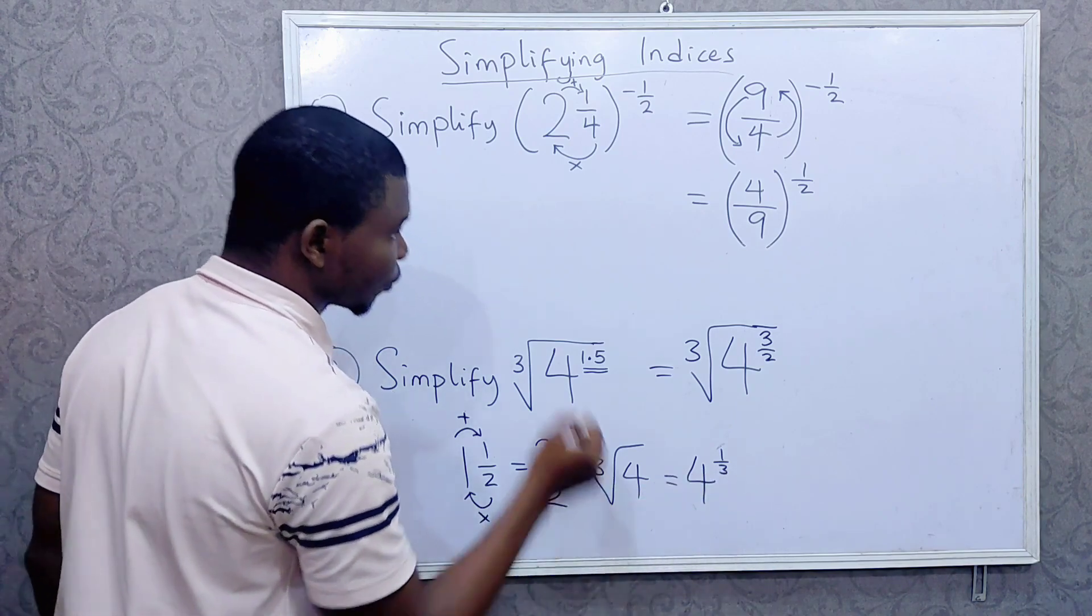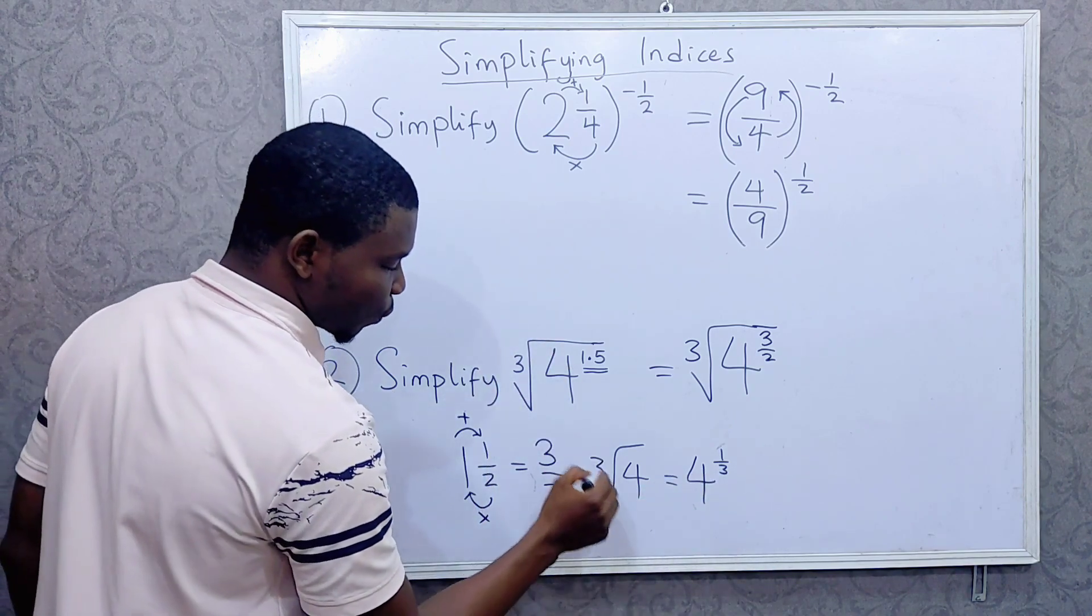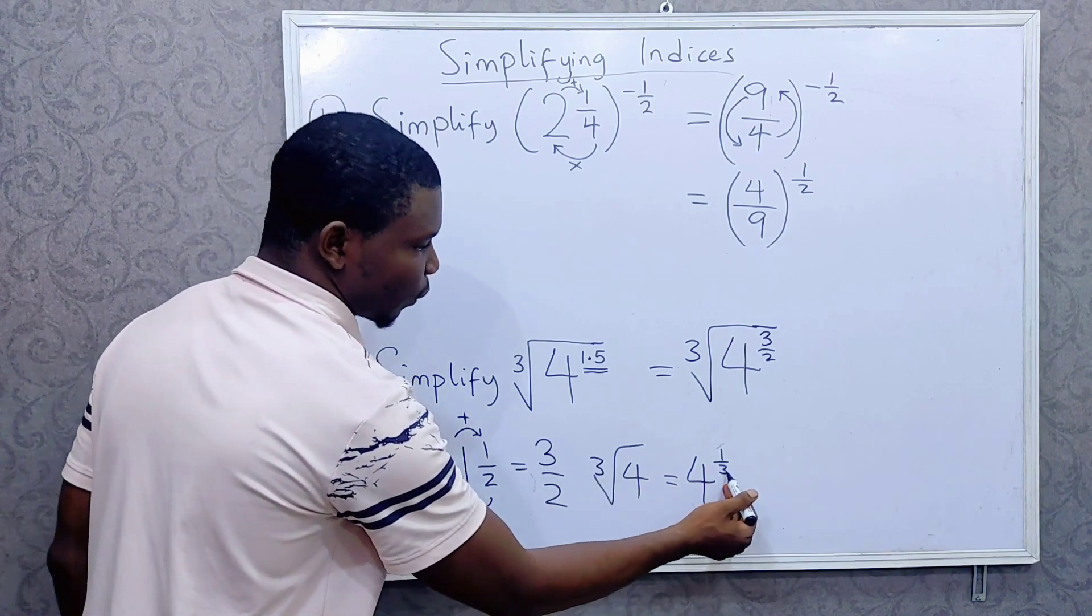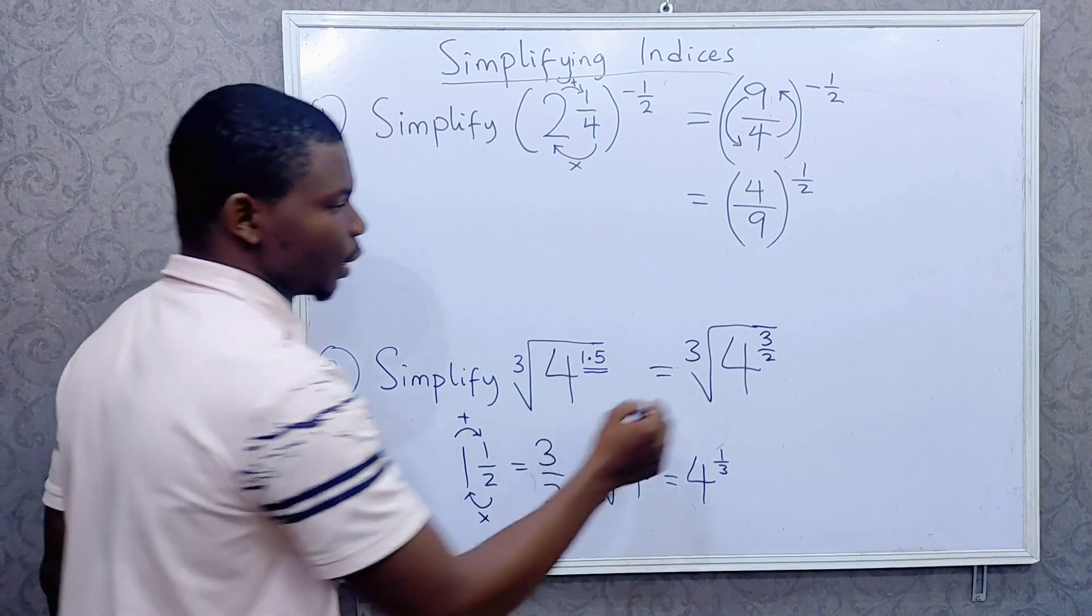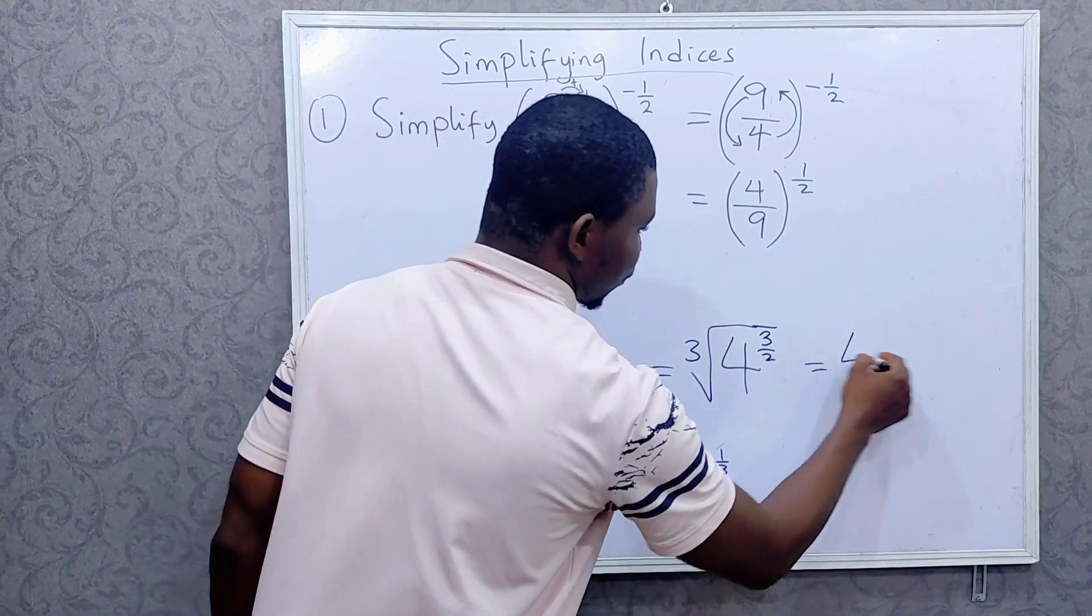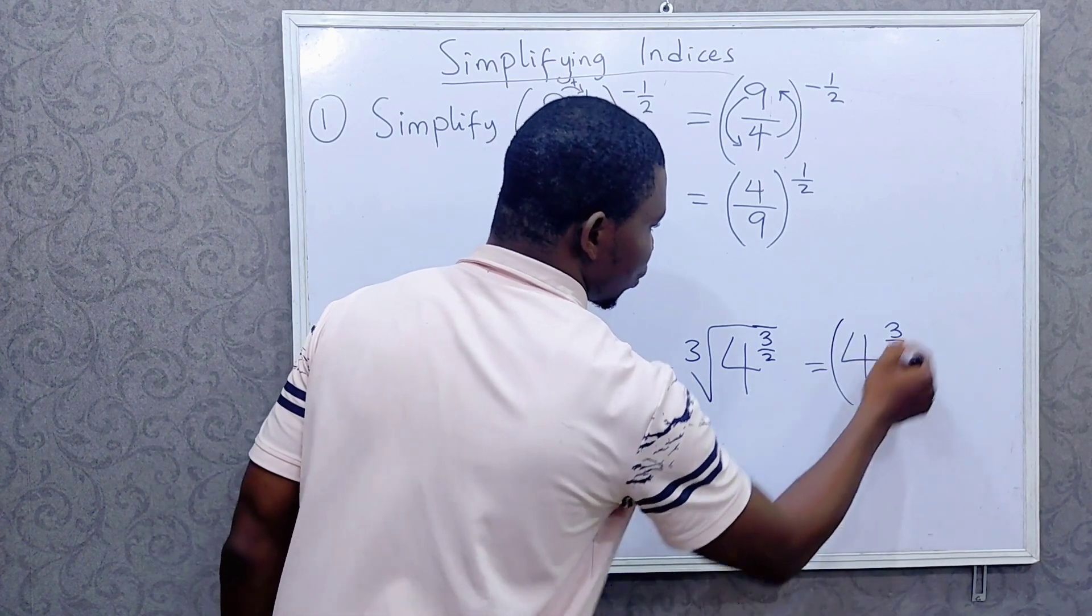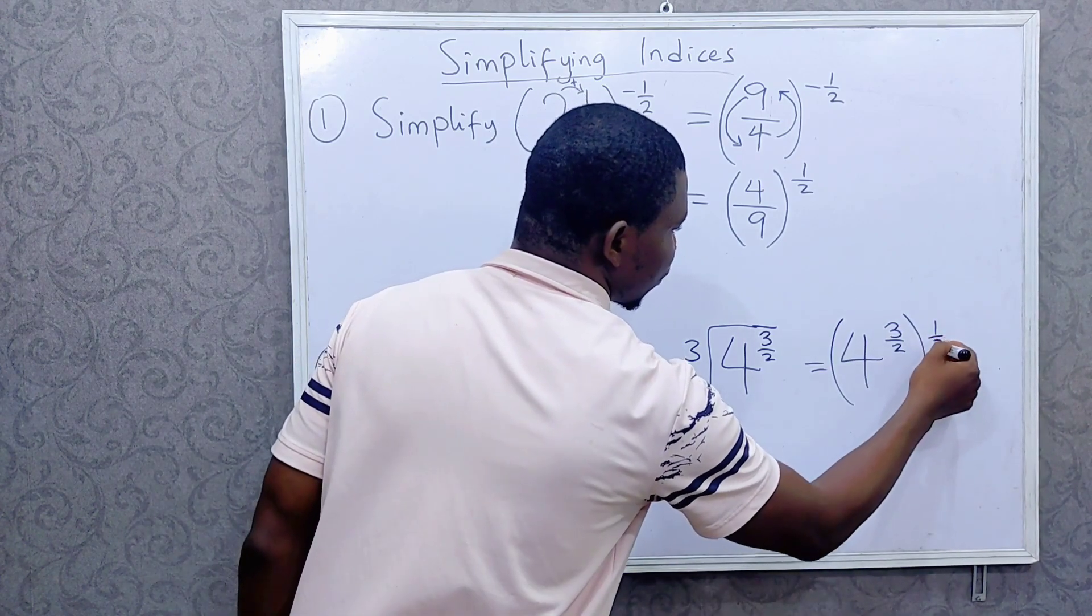If it is fourth root, maybe this is 4, this would be 1 over 4. If it is fifth root, this would be 1 over 5. And so on. So this would be 4, 3 over 2, then cube root will be 1 over 3.